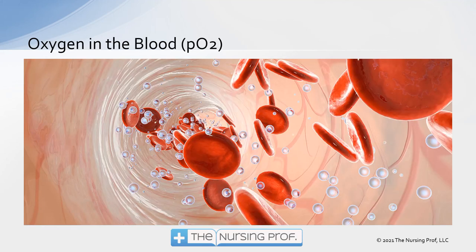When oxygen first moves across that alveolar capillary membrane, it's going to dissolve in the blood. Those little round, clear-looking circles in the diagram represent the oxygen dissolved in the blood. Some of that dissolved oxygen will bind to hemoglobin, and that's the part that's going to be taken to the tissues in the body. The oxygen that's dissolved in the blood cannot be used for the most part by our tissues — it has to be the oxygen that's on the hemoglobin.